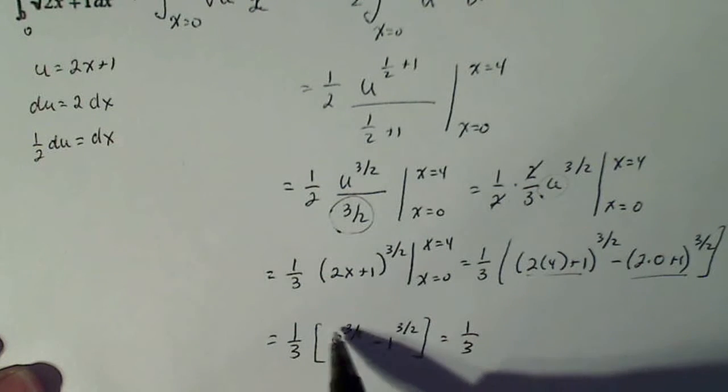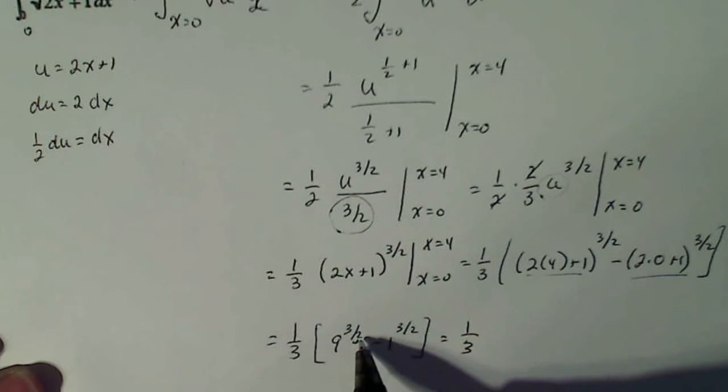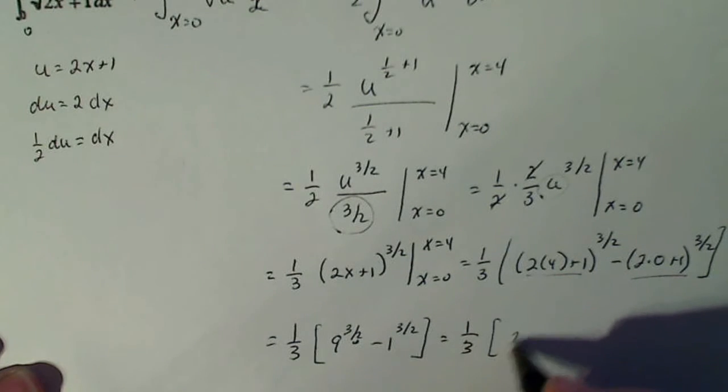9 to the three halves—the denominator is a root. So that's going to be the square root of 9, which is 3. And then 3 cubed is 27 minus 1.